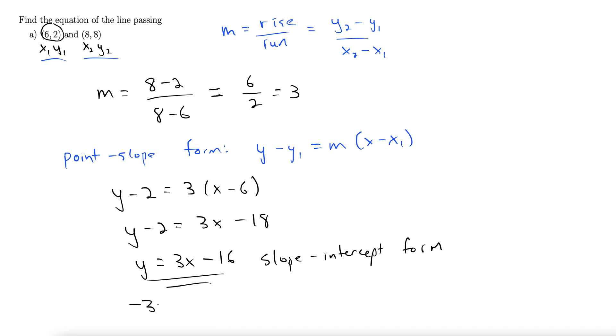That'll give a standard form. Doing that gives negative 3x plus y equals negative 16. There's standard form. That's ax plus by equals c.